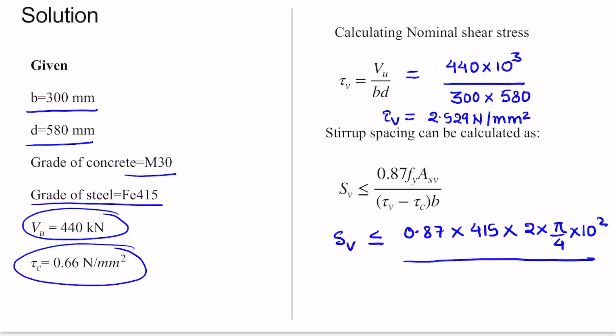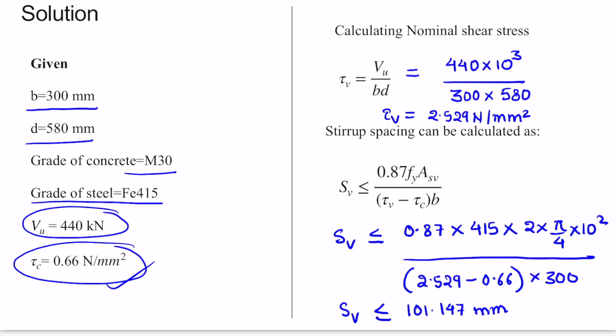Divided by the value of τ_v which is 2.529 minus the value of τ_c given to us as 0.66 N/mm², multiplied by the width 300. Solving it, we get our value of S_v which is less than or equal to 101.147 mm.